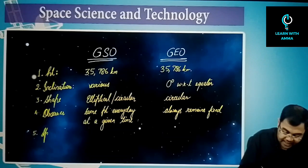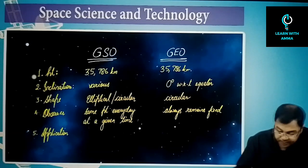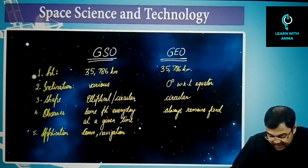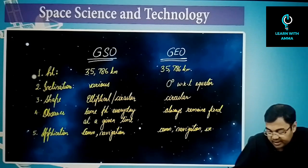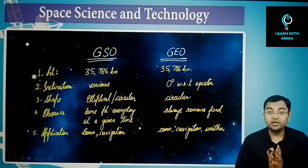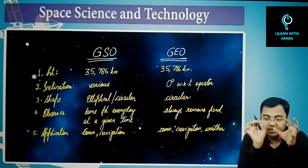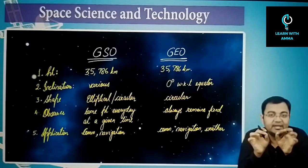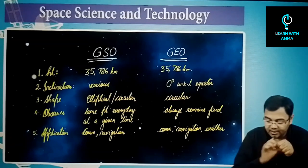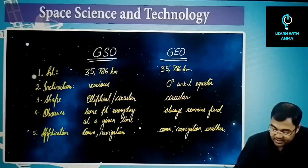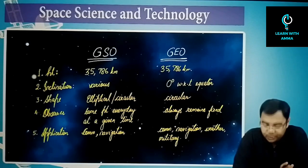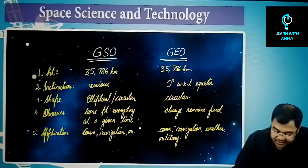From an application standpoint, both geosynchronous and geostationary orbits can host communication satellites, navigation satellites, weather monitoring satellites — because geostationary satellites always observe a fixed region of Earth — and military or defense-related satellites.